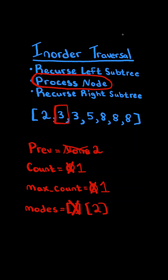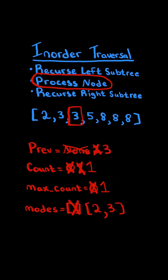The previous value is different than the current value, so we reset the count to 1, and we don't update max count. But if the count and max count ever equal the same value, then the current value is tied with the highest mode. Lastly, we update previous to the current value and continue. Now notice previous is equal to current, so we increment the count. Since the count is greater than max count, we update max count. And if we ever update max count, we know we found a new highest mode, so we update the mode list to the current value.